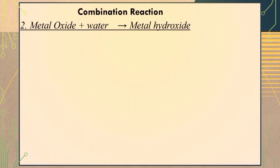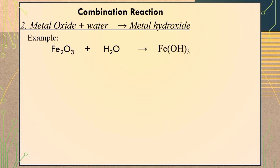Another type of combination reaction is when a metal oxide combines with water to produce a metal hydroxide. For example, when iron(III) oxide combines with water, it will produce iron(III) hydroxide. Remember that iron here uses a positive three charge while hydroxide is a polyatomic ion with a negative one charge. Thus the correct chemical formula of the product is Fe(OH)3.